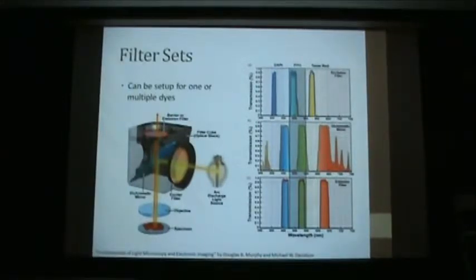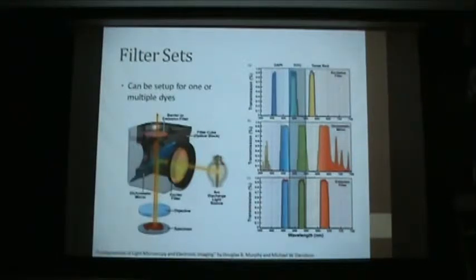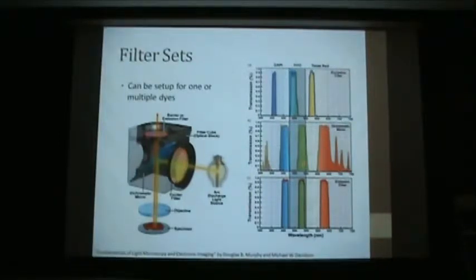The spectra on the side are for a filter cube that handles three different dyes. I've highlighted the FITC channel. Microscopists often use dyes as shortcut nomenclature — FITC, GFP, and Alexa 488 all have very similar spectral characteristics. So you'll come up to a microscope and someone will say 'this is the GFP filter,' and if you really have Alexa 488, you're in good shape. Here we're exciting FITC at 500 nm; the dichroic mirror reflects light at 500 but transmits longer wavelengths, and then the emission filter transmits 510 to 540 nanometers.